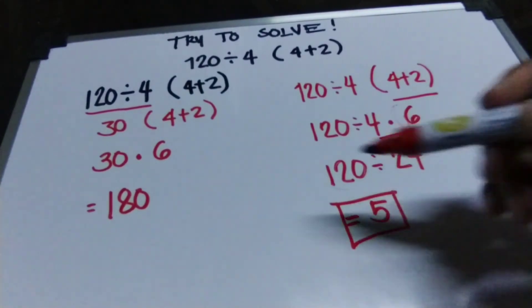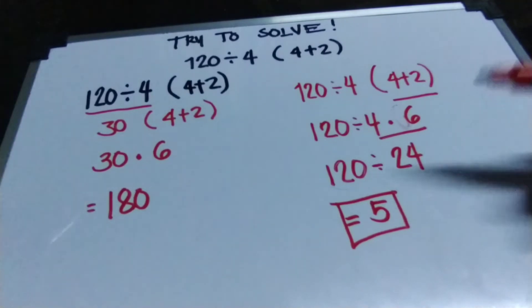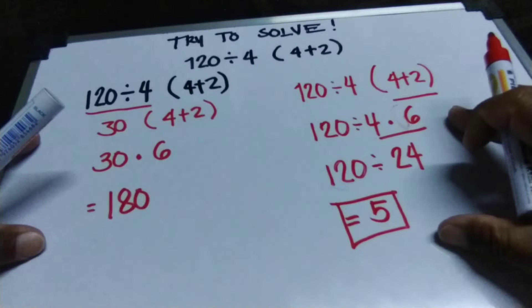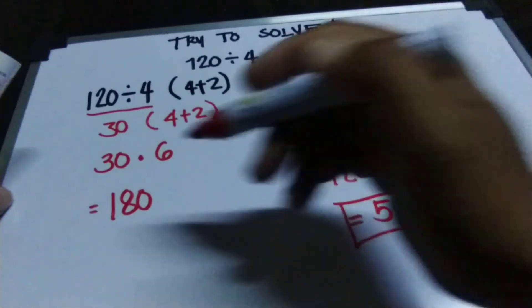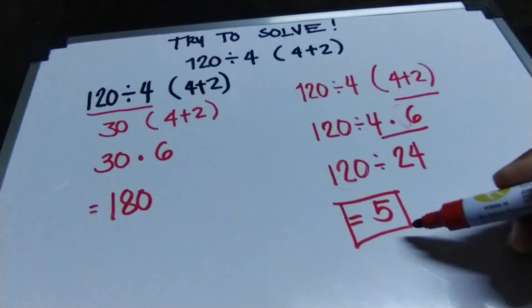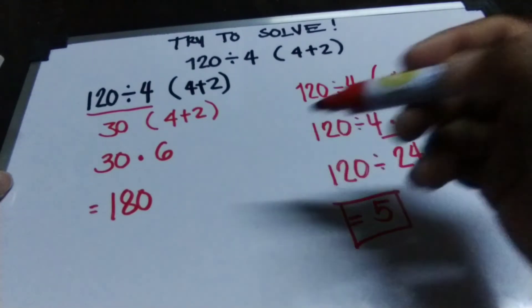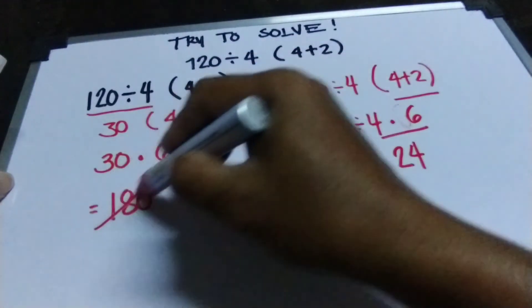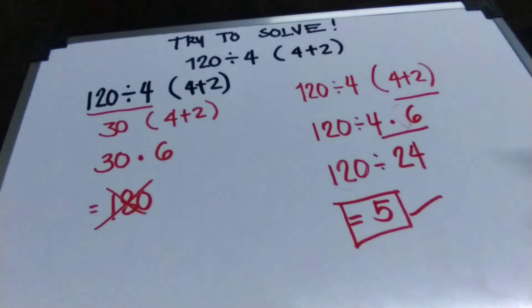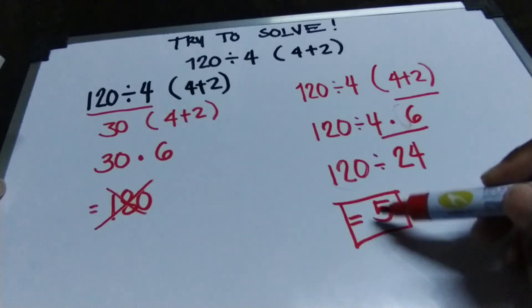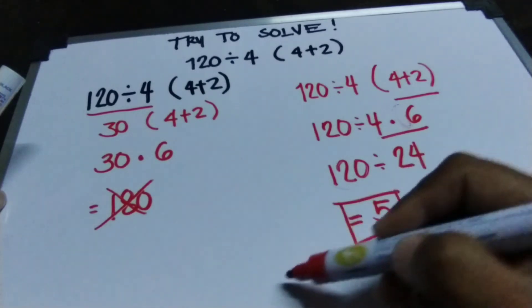As you can see, these are two different answers. So now, how do you know what is the right answer — 180 or 5? The right answer is 5.